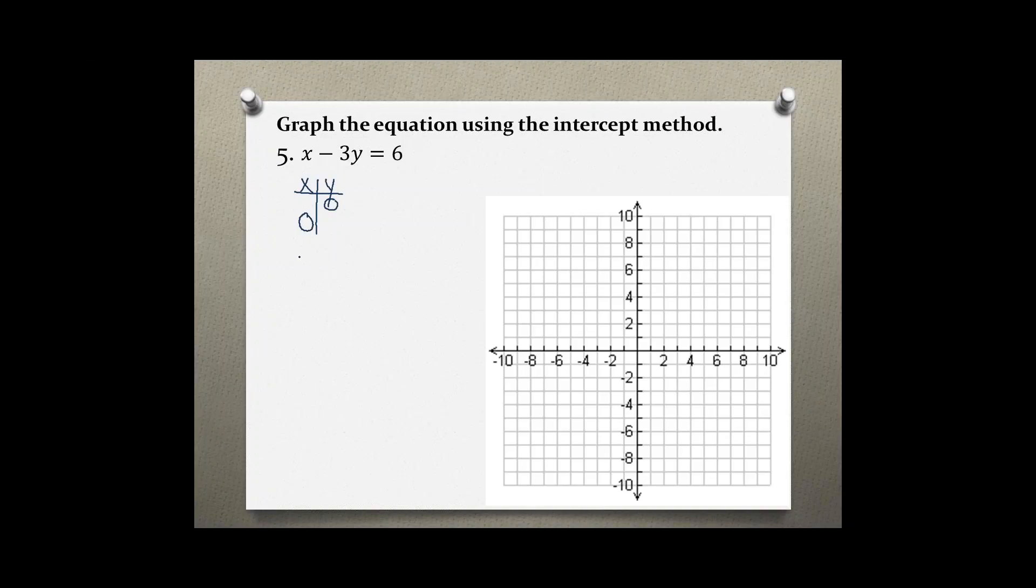So in the original equation let's first find the x intercept by plugging in a zero for y. x minus 3 times 0 equals 6. Negative 3 times 0 is 0, gone. So x equals 6.